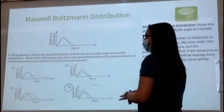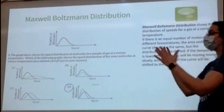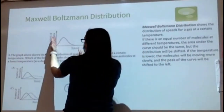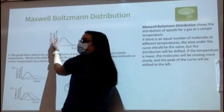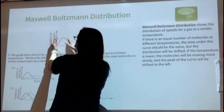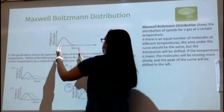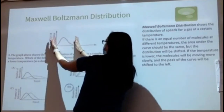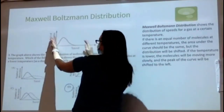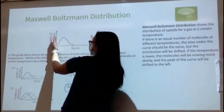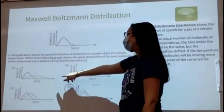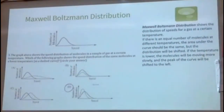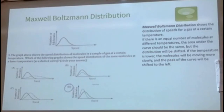If we wanted a higher temperature graph, we elongate the curve to the right — more molecules traveling at higher speeds. Answer A would show a higher temperature distribution. The Maxwell-Boltzmann distribution shows how the speed distribution for a gas looks at different temperatures.